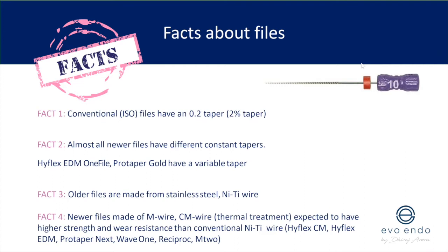A hand file has a 16mm cutting length — from the tip of the file to where the cutting edges end. That's why sometimes you see endodontists not even measuring the file at every step; we know roughly where we are and then we measure it for our working length.